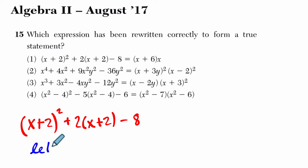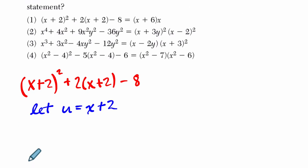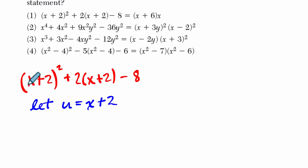So let's say let u equals x+2, and this really helps us see how this thing is quadratic. If we let u equal x+2, we write u² + 2(x+2). Well, that's just 2u - 8. And then we can factor this thing.